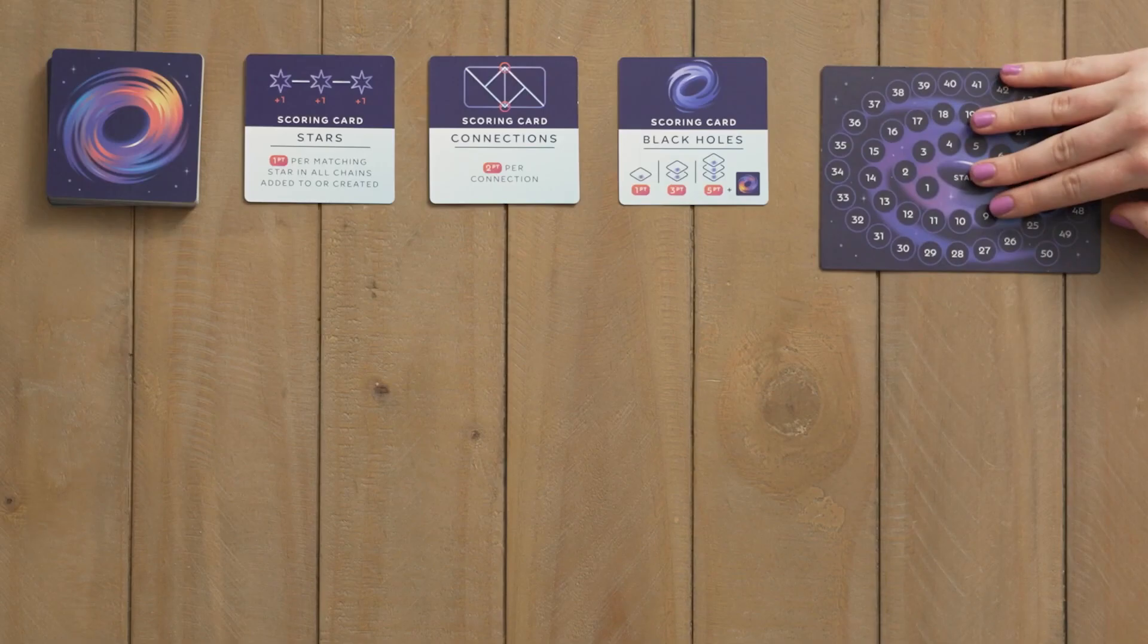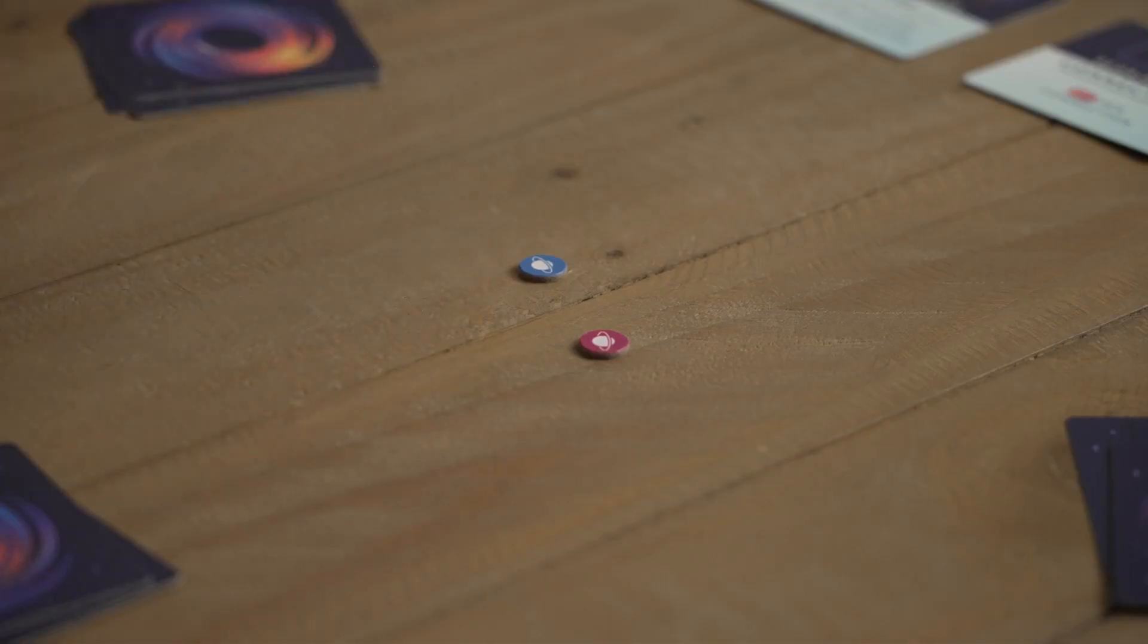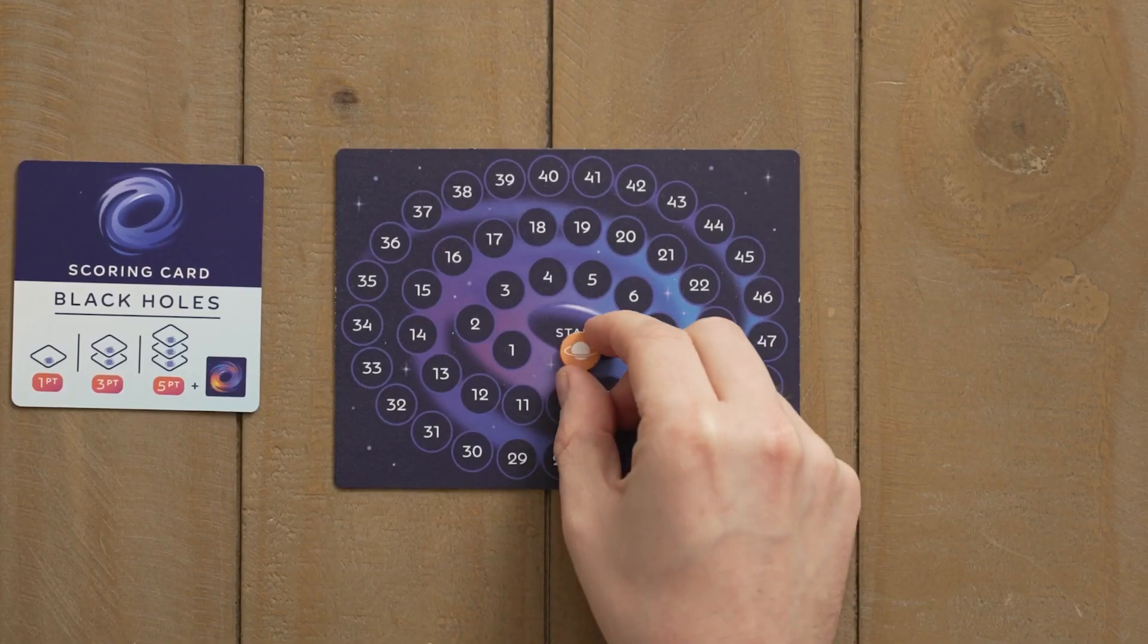Grab the scoring track, each choose a coloured scoring token and put it on the starting spot.